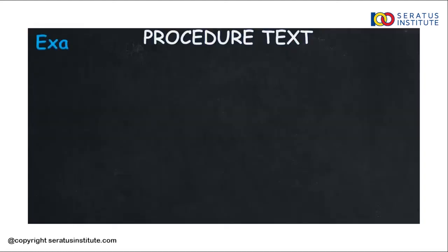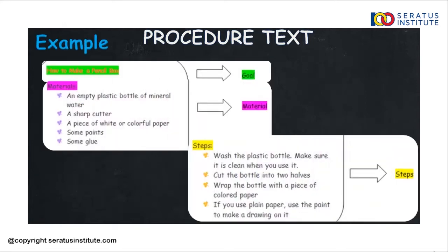Now, here is the next example of procedure text: how to make a pencil box. As you can see, 'how to make a pencil box' is the title, and it shows you the goal of the text. After that, we have materials — what are needed to make a pencil box. Then, the last, we have steps. Here, 'wash' is the action verb, and 'wash the plastic bottle' is the imperative sentence that we have talked about before. Gampang kan Sobat Seratus? It is easy, breezy, lemon squeezy!